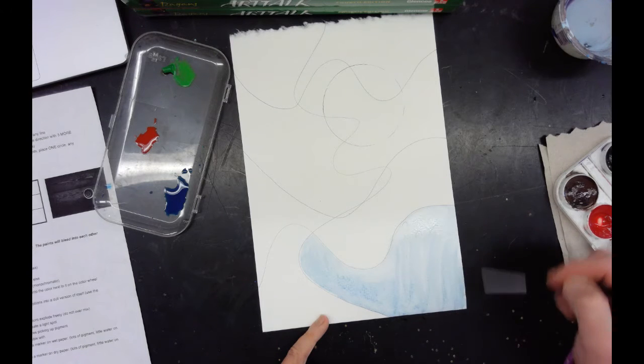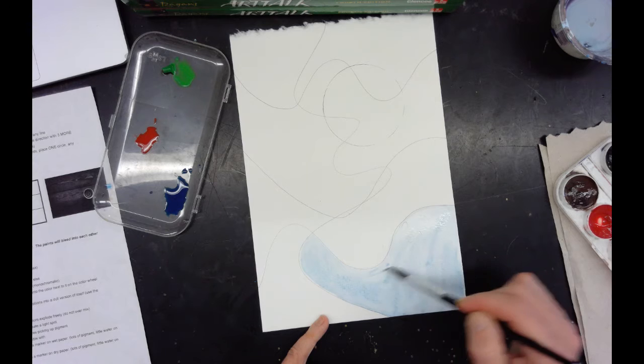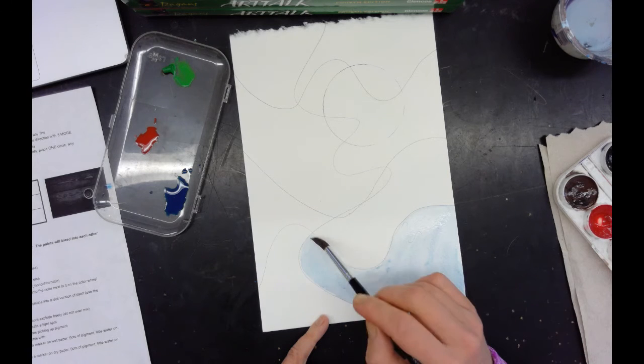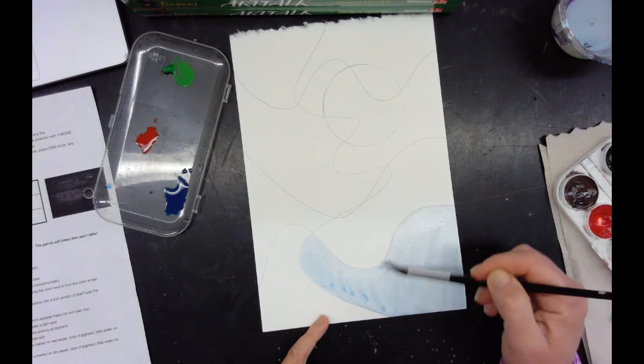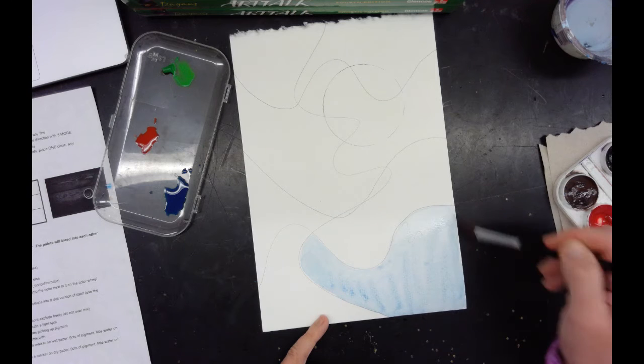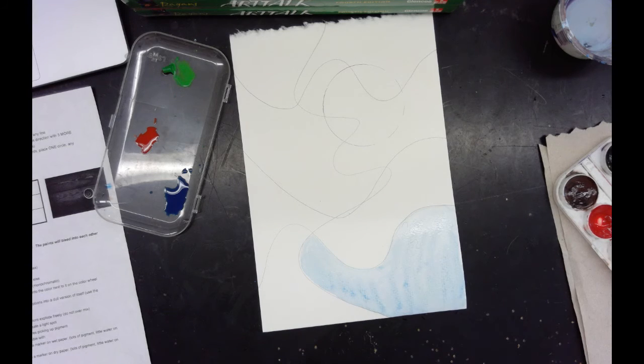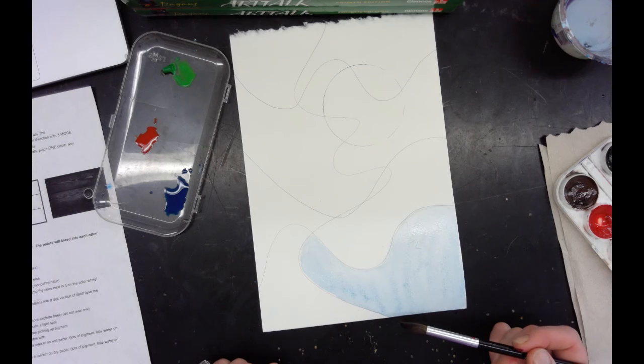And that would be just an even coated wash with watercolor. There's always going to be potentially a little bit of variety, but this has enough water on it that it may kind of even out a little bit more as it's drying and these streaks may go away.